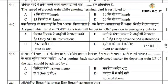Coming to the next question: the speed of a goods train while entering a terminal yard is restricted. When entering a terminal yard, the goods train's speed should be not more than 15 kmh — it should not exceed 15 kmh.